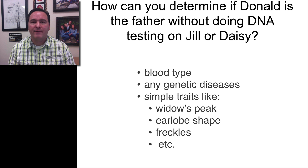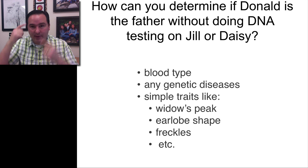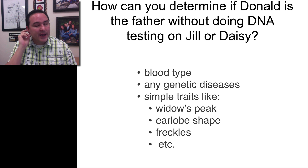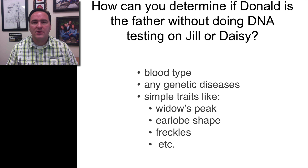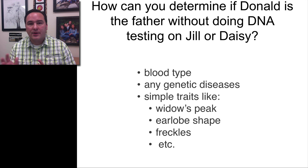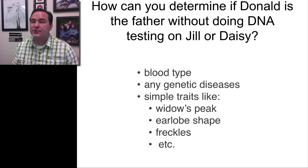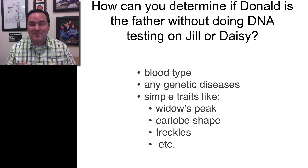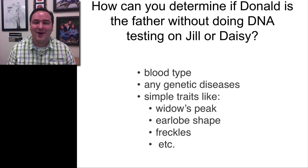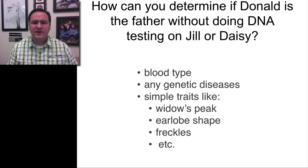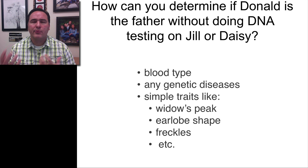There are also a bunch of different simple morphological traits, even in humans, that are passed on in a very simple inheritance pattern from parents to offspring — things like the widow's peak, where the hair comes to a point, the earlobe shape whether it's attached or unattached, and freckles. So Jack could potentially look at a suite of these characteristics in order to rule out, or potentially support, the idea that Donald is indeed the father.